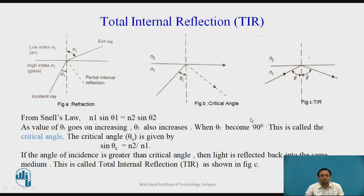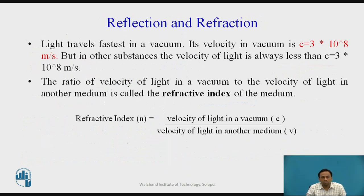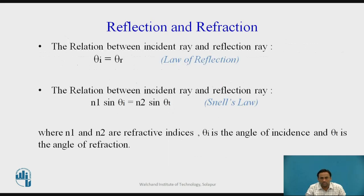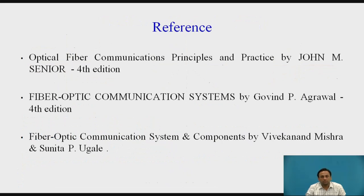To summarize: we have seen reflection and refraction, and how to calculate the refractive index — which is the velocity of light in vacuum divided by the velocity of light in another medium. Using Snell's law, we calculate the critical angle. Whenever theta-1 increases, the angle of incidence must always be greater than the critical angle so the light remains inside the medium. This is total internal reflection. Thank you.